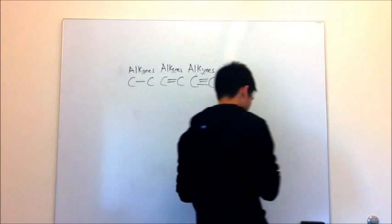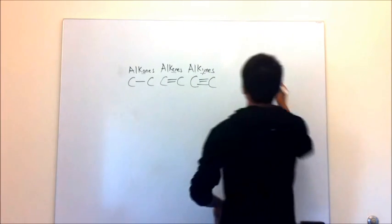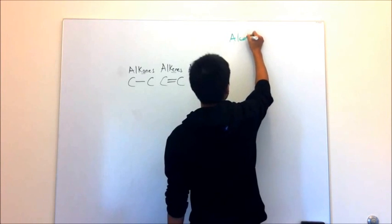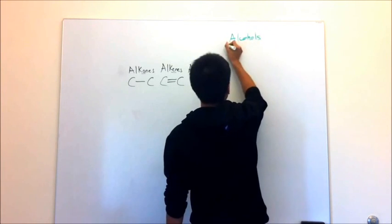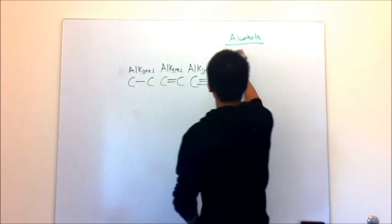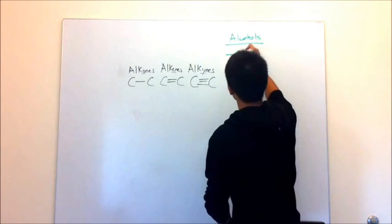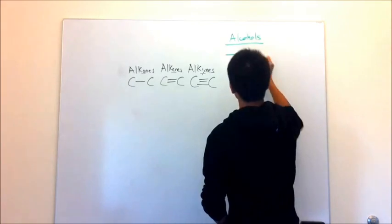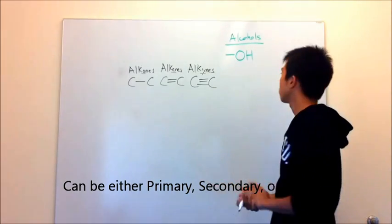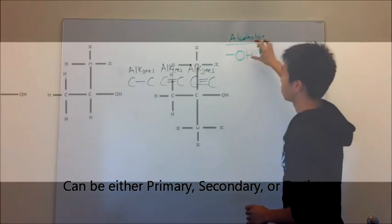Next is alcohols. Alcohols might be one of the easier groups to remember because it's just a carbon chain with an OH. You guys have probably seen this in high school. Just remember it as a carbon chain and then you have your oxygen bonded to a hydrogen.